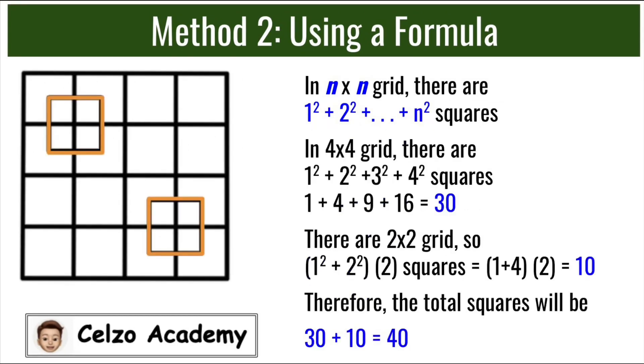Since we have 2 2x2 grids inside the square, we will do (1² + 2²) and then double it. So 1² + 2² is the same thing as 1 + 4. And then we double it, so we have 10. So 10 plus the original 30, that gives us 40.